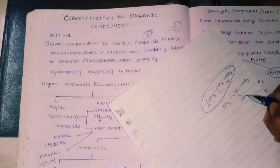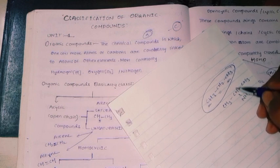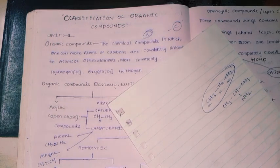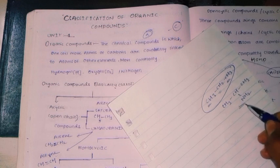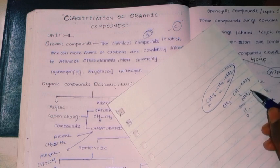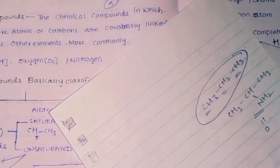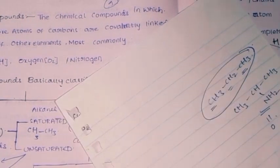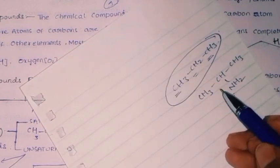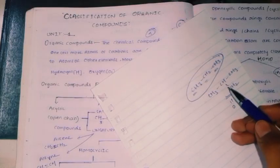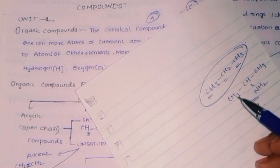We can use an NH2 group here, so this position will be NH2 or a C double bond. This position makes it an organic compound. So these are the organic compounds.